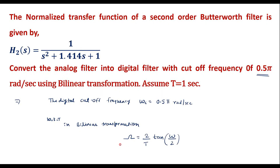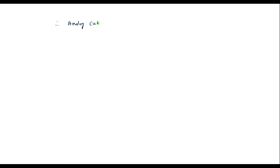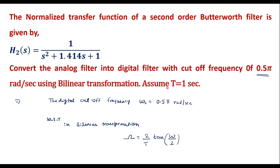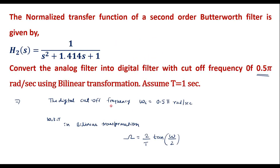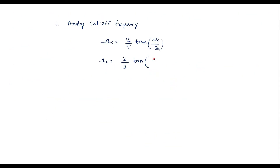With the help of this we will find the analog cutoff frequency. Therefore, analog cutoff frequency Ωc = (2/T) · tan(ωc / 2). Since T = 1 second, we have Ωc = 2 · tan(0.5π / 2).